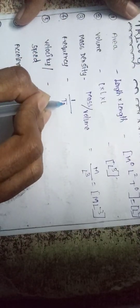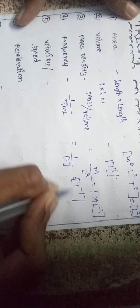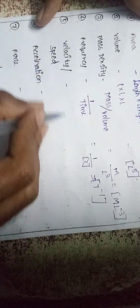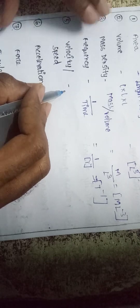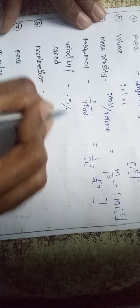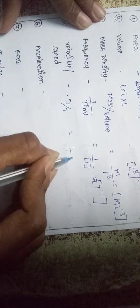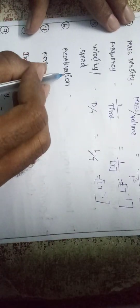For frequency, it is 1 by time period, so the dimension is T⁻¹. For velocity or speed, it is distance by time — distance is L, time is T, so the dimension formula is L T⁻¹.